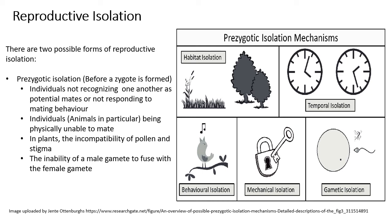Pre-zygotic isolation means that individuals don't even come to the point where their gametes are able to fuse to form a zygote. This can result from individuals not recognizing each other as potential mates or responding to mating behavior. Going back to the island example — the students who returned would have developed different mating rituals and signaling, so they would not recognize the school population as potential mates, and their gametes would never fuse to form a zygote.